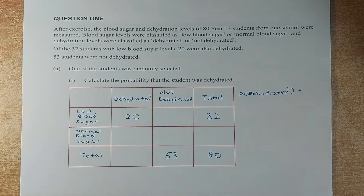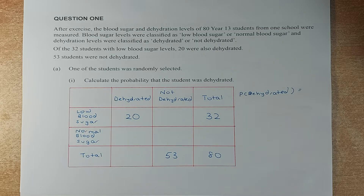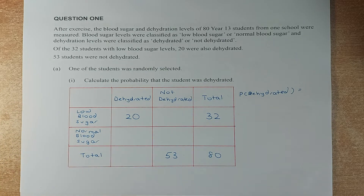In probability concepts, there are three or more ways to calculate probabilities. The first way is using the tables, the second way using the probability trees, and the other way is doing the Venn Diagram. In the question, they will not tell you which method to use. The table is the easiest way to do.